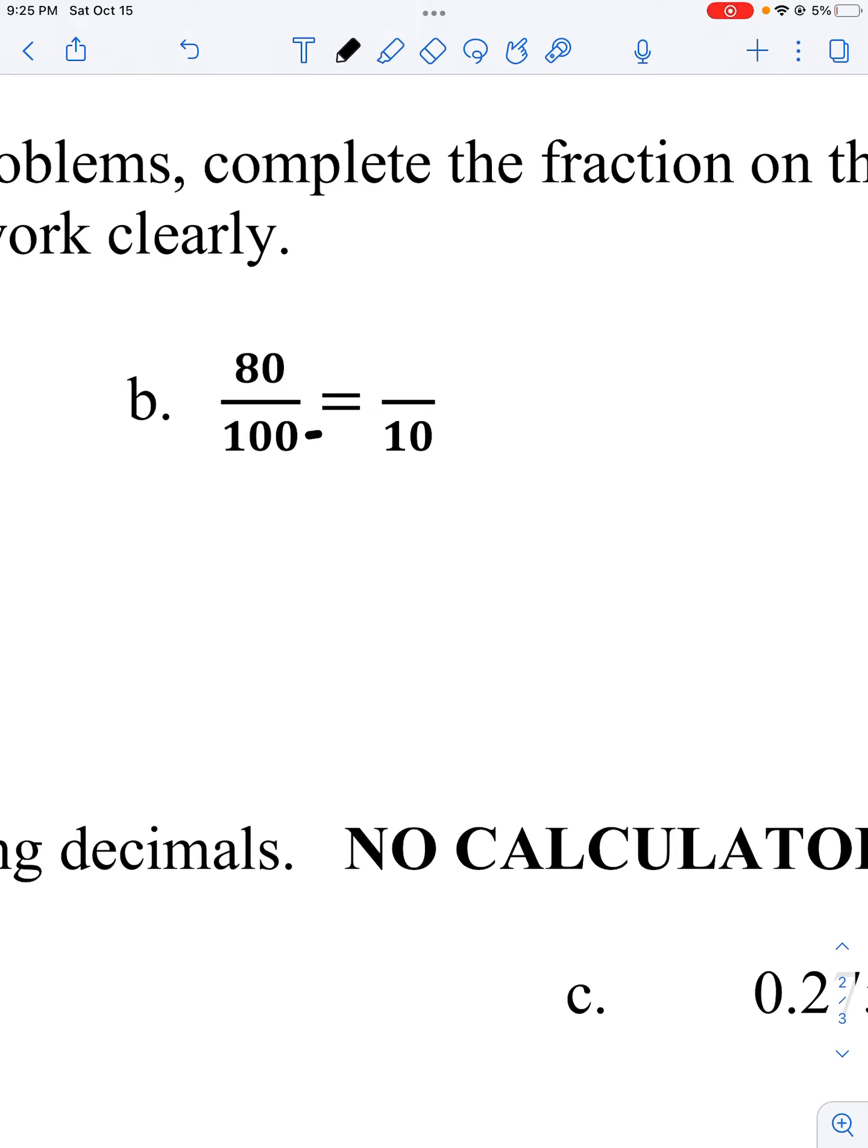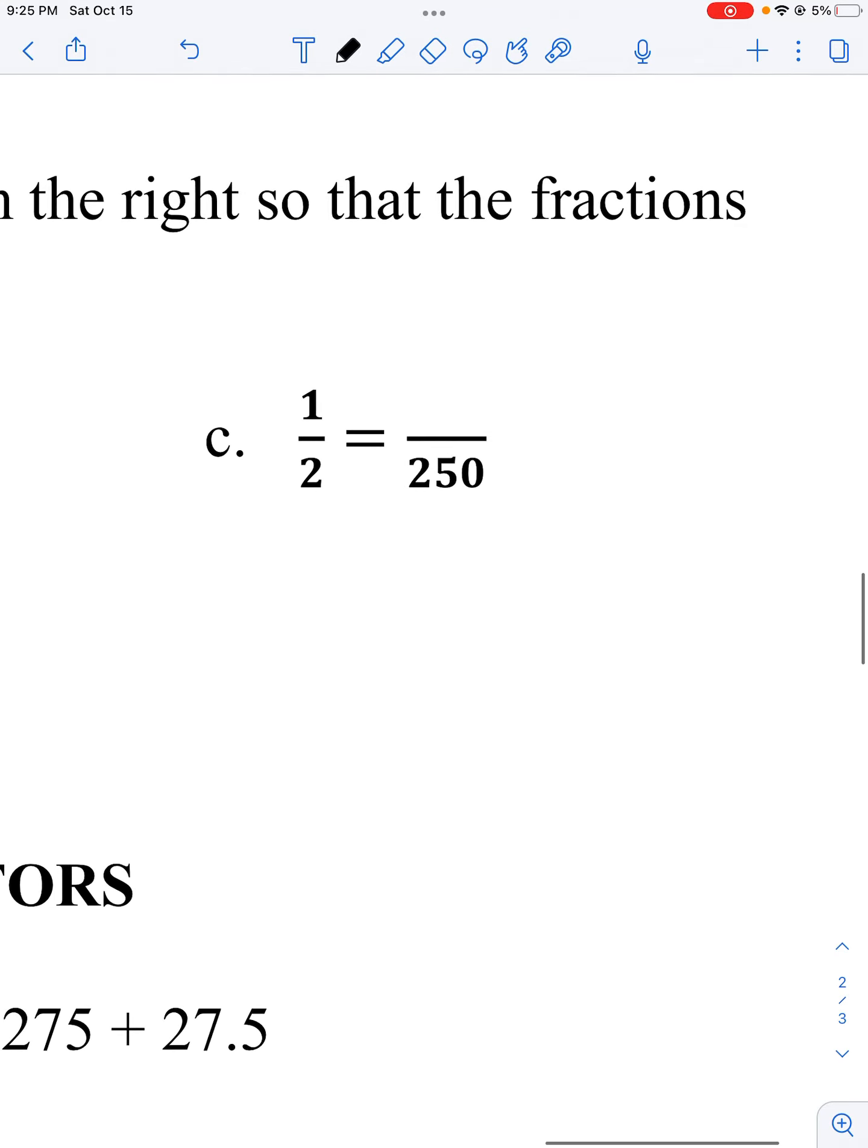For part B, not only can I multiply, I can divide. 100 divided by 10 is 10. So then if I do the same thing to my numerator, 80 divided by 10 is 8. It's 8 tenths.